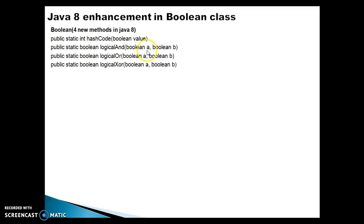The second API is logicalAnd. When you pass two Boolean parameters, the logical AND operator is performed on those two parameters and the result is returned as a Boolean. If you pass both parameters as true, you get true. If any one of them is false, you get false. That is the logical AND operator.